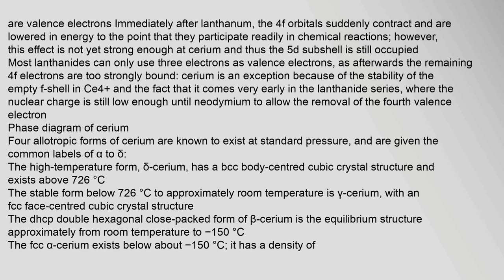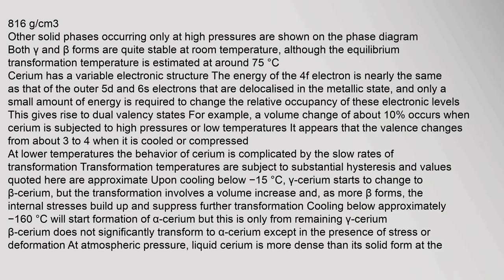However, this effect is not yet strong enough at cerium, and thus the 5D subshell is still occupied. Most lanthanides can only use 3 electrons as valence electrons, as afterwards the remaining 4F electrons are too strongly bound. Cerium is an exception because of the stability of the empty F shell in Ce4+ and the fact that it comes very early in the lanthanide series, where the nuclear charge is still low enough until neodymium to allow the removal of the fourth valence electron. Four allotropic forms of cerium are known to exist at standard pressure, given the labels alpha to delta. The high-temperature form, delta cerium, has a BCC body-centered cubic crystal structure and exists above 726°.